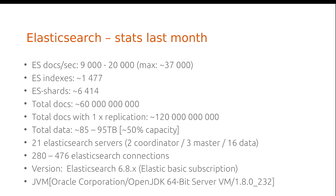Some stats for our Elasticsearch cluster: we have 1,477 indexes and around 60 billion log documents in the system. We use between 85 and 95 terabytes of data, which is only about 50% of our current capacity. The number of Elasticsearch connections from Logstash processor pipelines, Kibana instances, and other clients accessing the system is between 280 and 477. The system works really well.